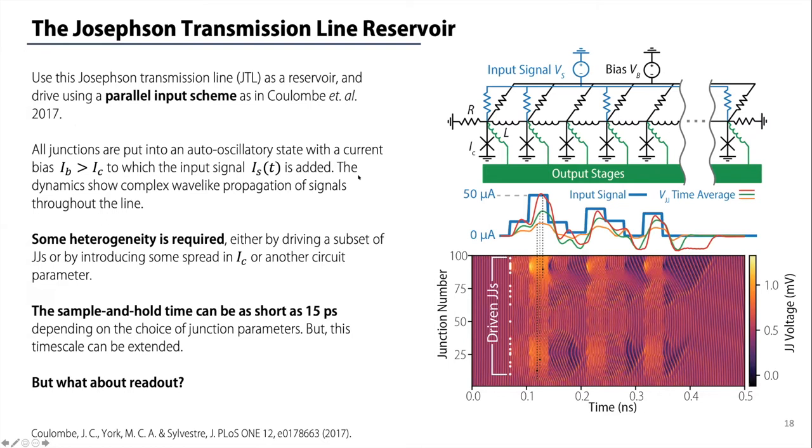So how do we actually get this to operate as a reservoir? We essentially turn this Josephson transmission line into a wave tank. Instead of inputting from the left, reading out on the right, we actually terminate the system on either side and we start doing an input from the top, from the side. We put all these junctions into an auto-oscillatory state with a bias current. Meanwhile, we input our signal in parallel but in a heterogeneous manner.